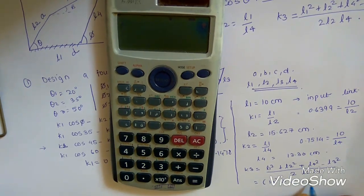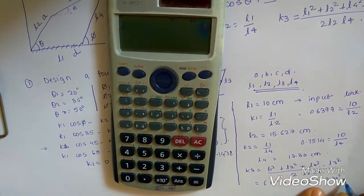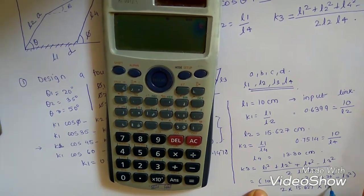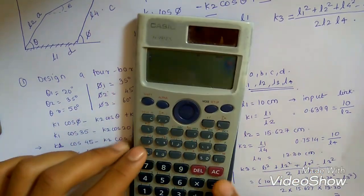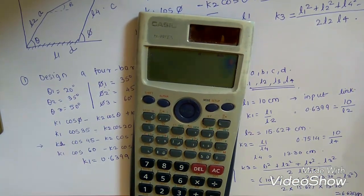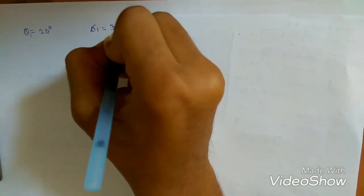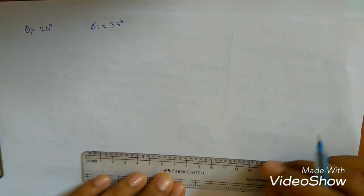Substituting the known values into the k3 formula, we can solve for L3. This was everything about Freudenstein's equation and how to solve and find the length of the links. In the question, we will be asked to synthesize the mechanism in the first, second, or third position, or all positions for the given angles. Let's assume we have been asked to synthesize the mechanism in the first position, where the input angle was 20° and the output angle was 35°.